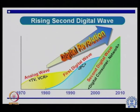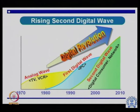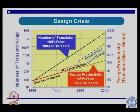The first wave was the analog wave — most VCRs and TVs in the consumer market were analog. The first digital wave was based on the PC market. Now, the second digital wave is essentially in the consumer and network market. We progressed from gate-level design in the early 1990s to RTL design, and now even architectural-level design.